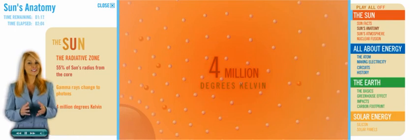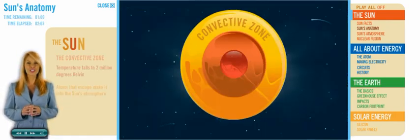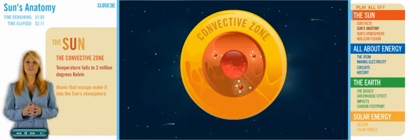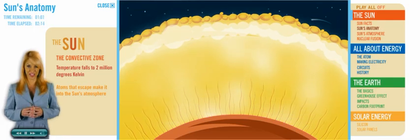The photon's next stop is the convective zone, where the Sun's energy continues outward toward the surface. The temperature in the convective zone falls to about 2 million degrees Kelvin.